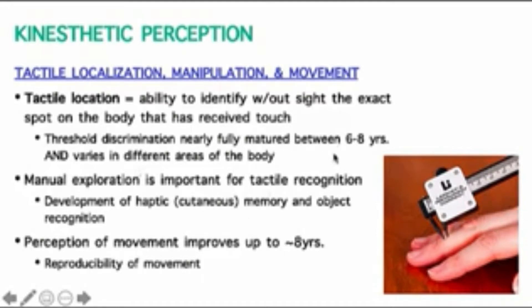Two-point discrimination is usually fully matured between six and eight years old, but it varies in different parts of the body based on how far apart our receptors are placed throughout the skin and how large receptive fields are for different receptor types. Our feet and hands are in contact with a lot of different things, so understanding where we have points of contact on those surfaces is really important for control of movement, balance, and grasping objects. On high-contact surfaces, you typically have very sharp kinesthetic perception of tactile location.